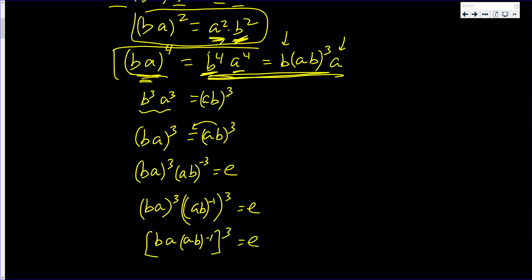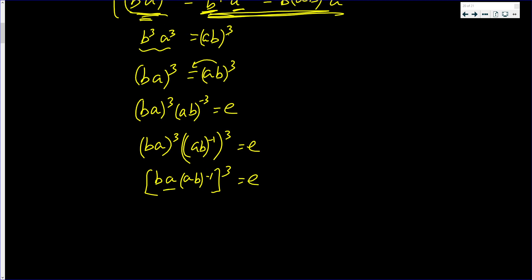equaling e. There's only one element in this group that when you cube it, you get e. And that element is e. And that's because 3 does not divide the order of the group.